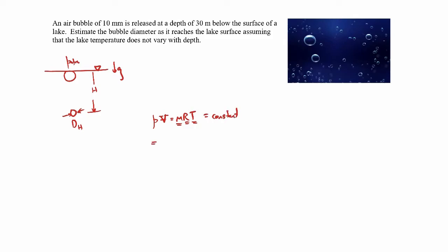Which then means that the pressure at any depth h and volume at any depth h will be the same as the pressure at the free surface and the volume at the free surface. So the free surface, the zero subscript here, refers to being right up here where h is zero.